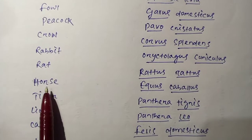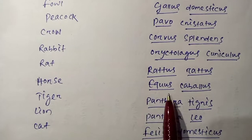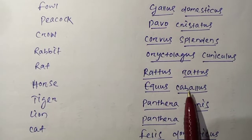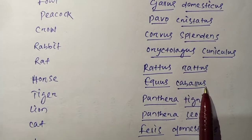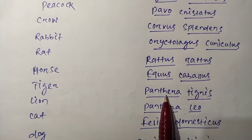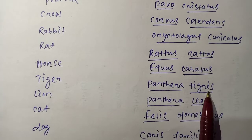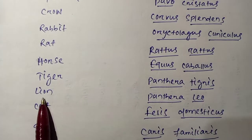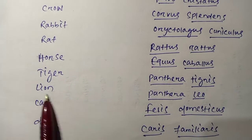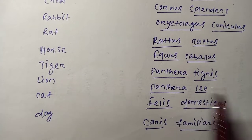Next is Horse. The zoological name is Equus caballus. Next is Tiger. The scientific name is Panthera tigris. Next is Lion. The scientific name is Panthera leo.